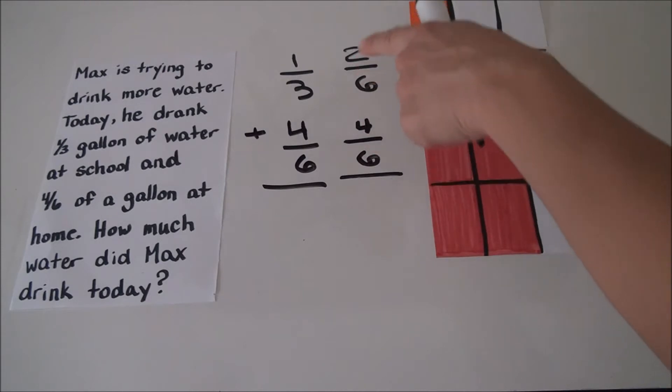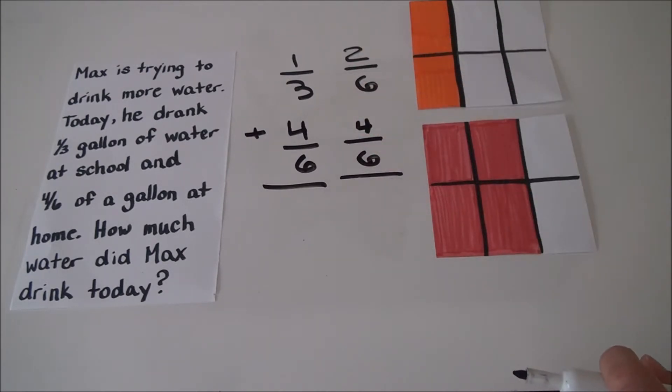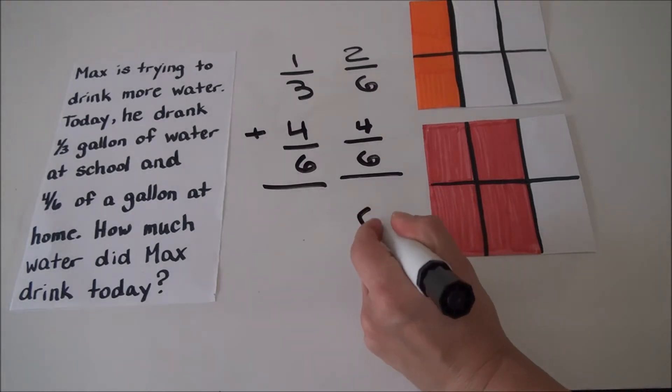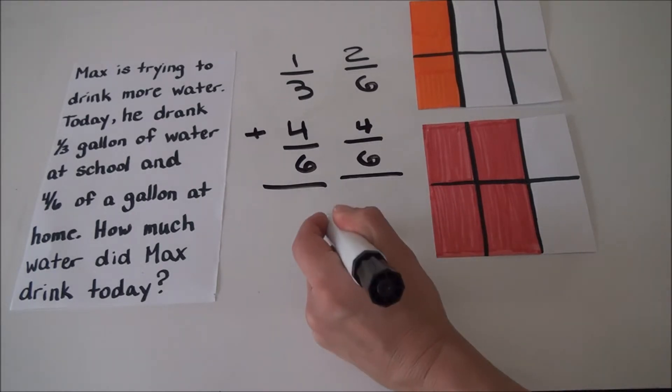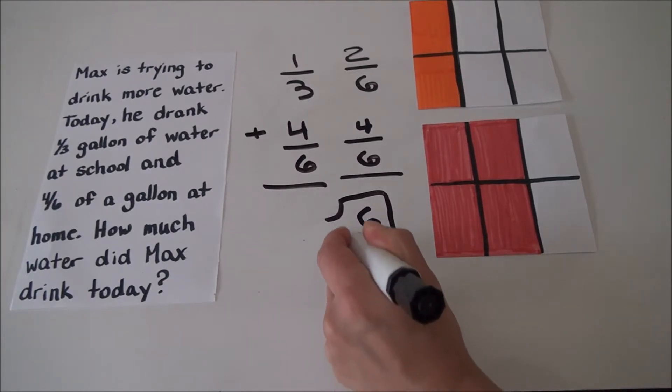Now I can easily add these two fractions because they have a common name, a common denominator. The sum is six-sixths, or I can call that one-whole.